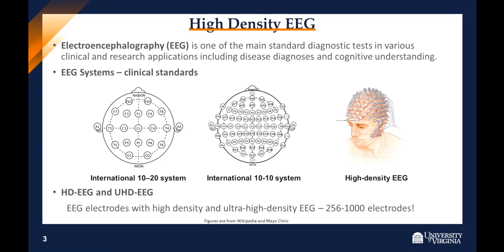In recent years, high-density EEG and ultra-high-density EEG with 256 to 1000 electrodes have been successfully developed, and they are also being used in clinical and research applications. The right figure shows a typical high-density EEG. We can see that the spatial resolution of EEG electrodes is much higher than the traditional 10-20 or 10-10 system.